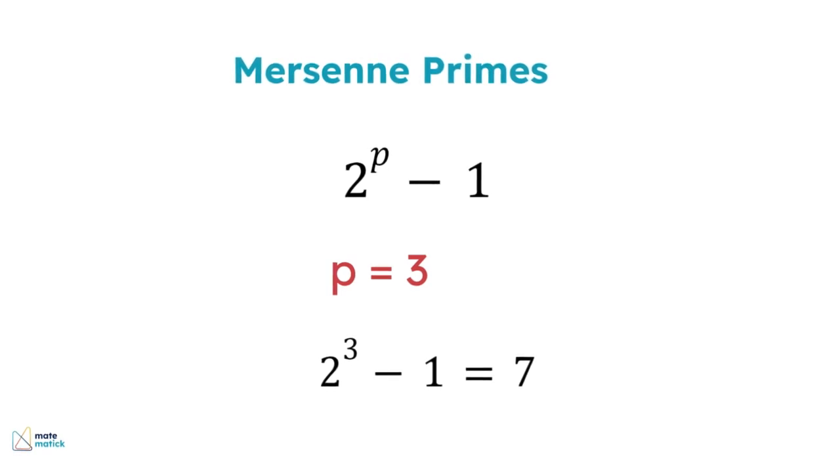For instance, when p is 3, 2 to the power of 3 minus 1, which is equal to 7, is a Mersenne prime.